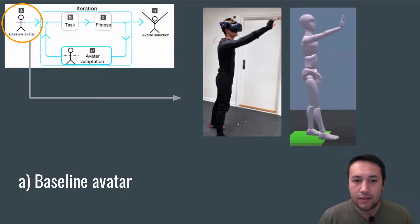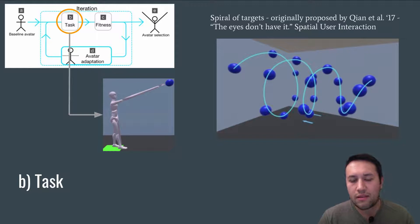A baseline avatar in this case is simply an avatar that matches the user's body. As a task, we had a spiral of targets and the user would have to reach and tap the highlighted target, which sometimes required walking.